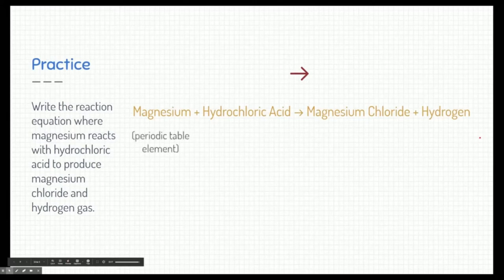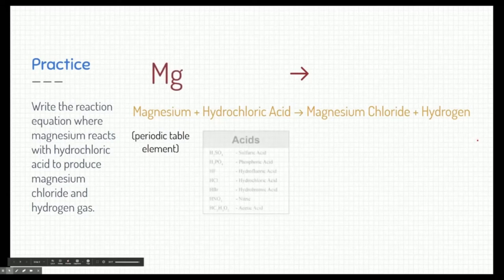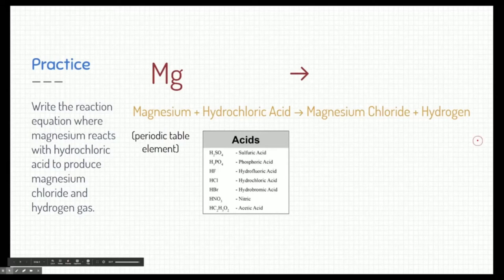Let's start with magnesium. Magnesium is just a periodic table element. So, really simply, we just write Mg. Next, let's look at hydrochloric acid. The word acid is a major hint that we should probably go look at the acids list on the back of our periodic table and write the appropriate one. So, in this case, hydrochloric acid is HCl.